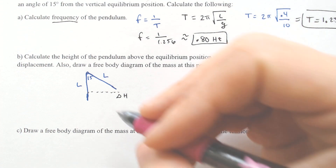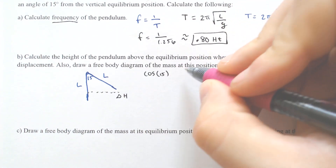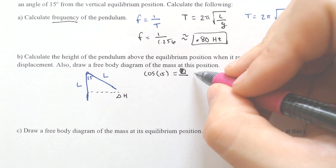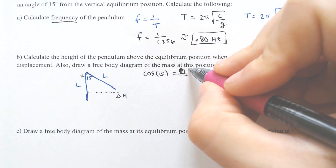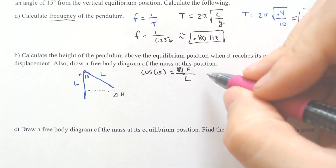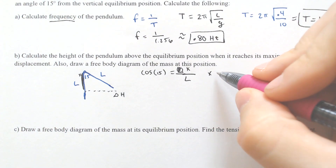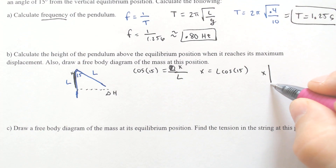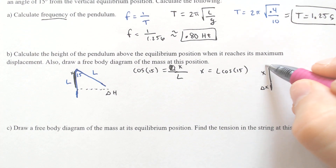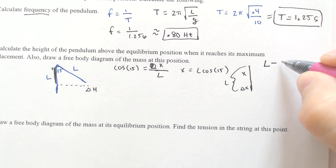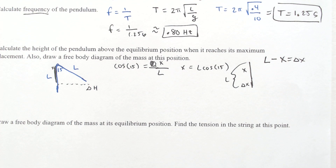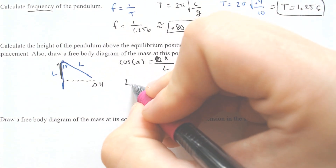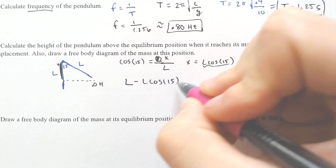The change in height relates to the 15 degrees. Cosine of 15 degrees equals X over L, where X is the vertical component. So X equals L cosine of 15. Since the whole length is L and the vertical component is X, L minus X equals the change in height. Substituting, L minus L cosine of 15 equals the change in height, which we can factor as L times (1 minus cosine of 15).